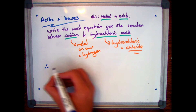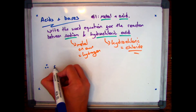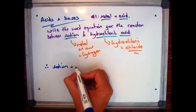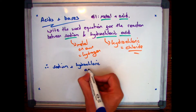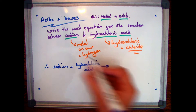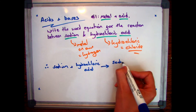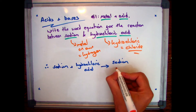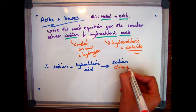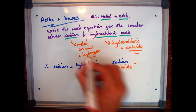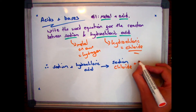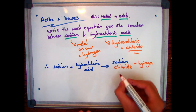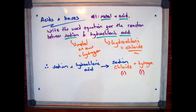So if you wanted to write the word equation for this, we take the name of the metal, which is sodium, and we're reacting with hydrochloric acid — that's both our reactants. We then put our arrow in to show what we're forming, and then we take the name of our metal, which is sodium, and we take our salt ending, which is chloride, so the name of our salt is sodium chloride. And then our by-product, because we've got a metal on its own, is hydrogen. So you'll get one mark for sodium chloride and one mark for hydrogen.